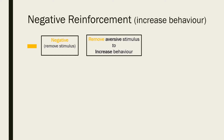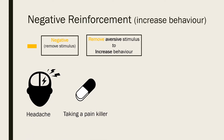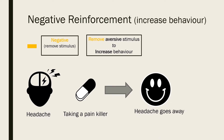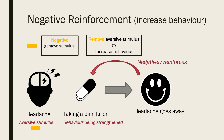Let's illustrate this with an example. You get a bad headache and so take a painkiller tablet. This gets rid of your headache. This is negative reinforcement because the behaviour of taking a painkiller will be strengthened and occur more frequently in the future, as it removes the aversive stimulus of the headache.